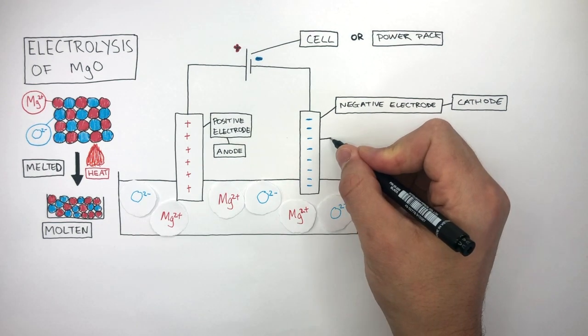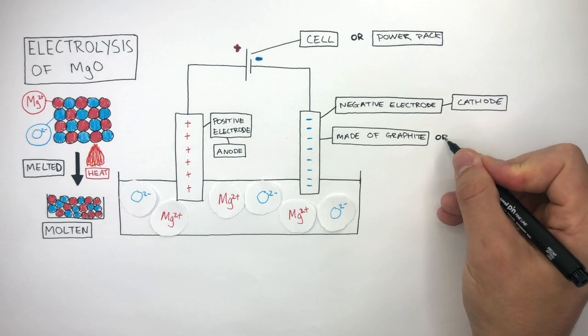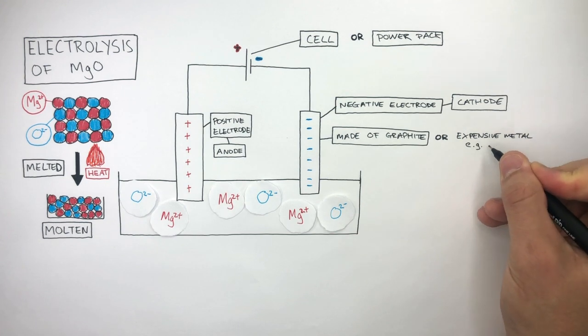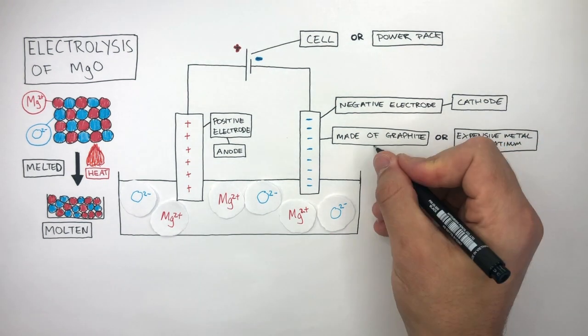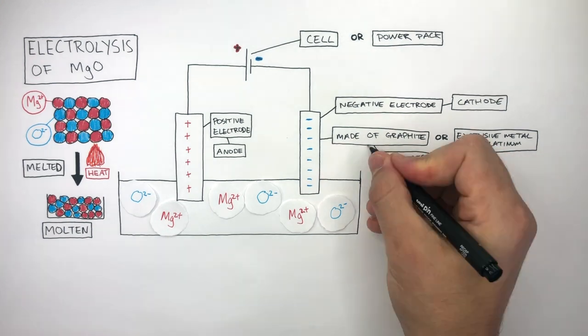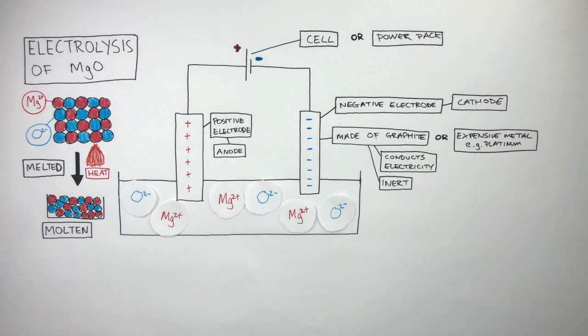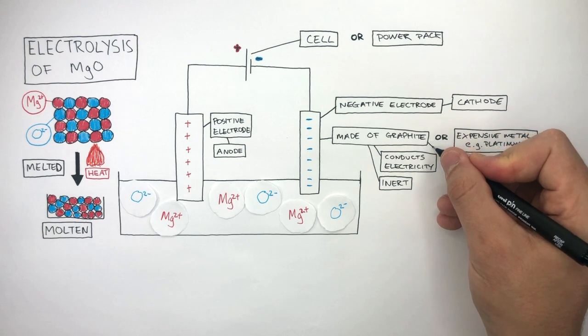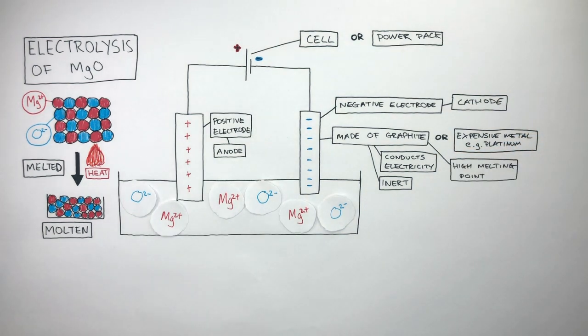Electrodes are normally made of graphite or they can be made of expensive metals such as platinum. Graphite is perfect for electrodes as they conduct electricity. They're inert which means they're unreactive and they have high melting points so will not melt in the hot molten liquid.